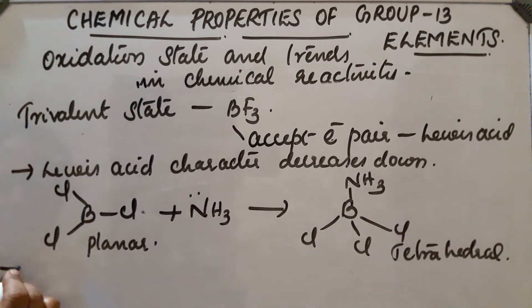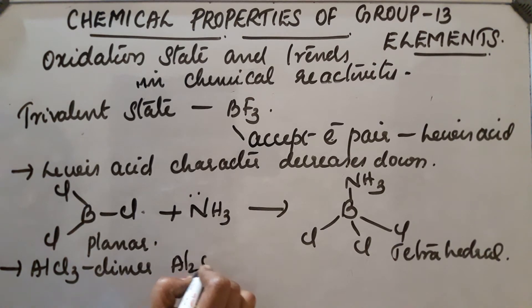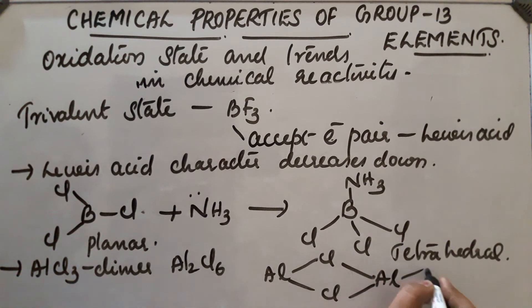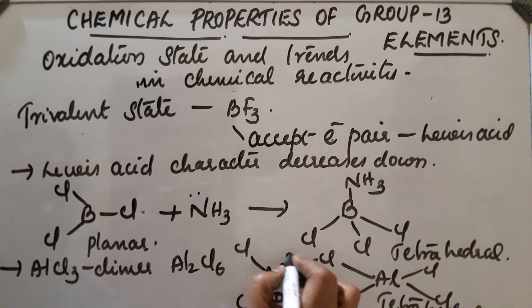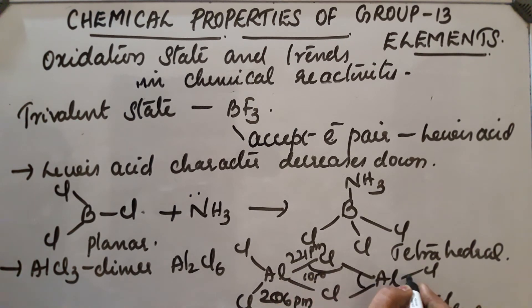Next, AlCl₃ forms a dimer Al₂Cl₆. The compound will be like this dimer, it's tetrahedral. This length is 206 pm and this length is 221 pm. This angle is 101 degrees, this angle is 118 degrees, and this angle is 79 degrees. This will be the tetrahedral structure.